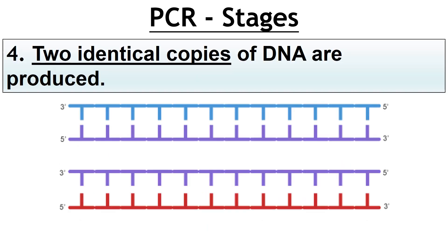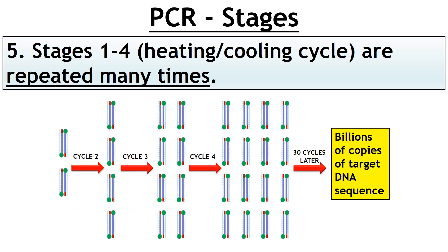Stage number four: two identical copies of DNA are produced. So the temperature went up, back down, up again, and you've now got your copies of DNA — two copies, going from one to two. What happens next is you just repeat it for a number of hours. Stages one to four, the heating and cooling cycle, are repeated many times, and after a couple of hours you'll have billions of copies of your target DNA sequence, which you can use for whatever type of analysis.